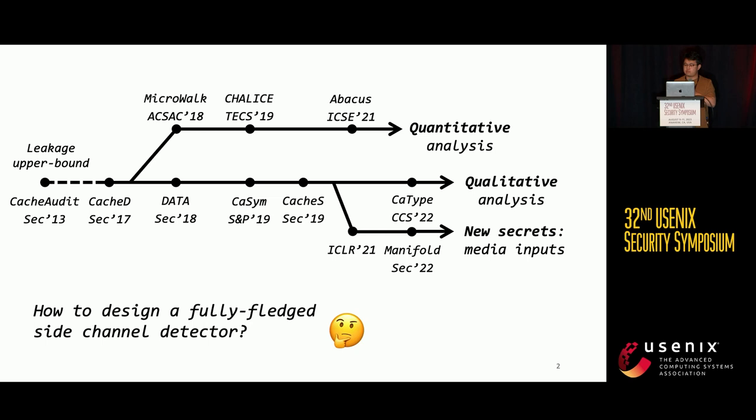There are also other works that conduct qualitative analysis. Besides checking if there are side-channel leakages, they also quantify how much information is leaked through side channels. Some recent works focus on a new type of secret: user input or media data, such as images or audios.